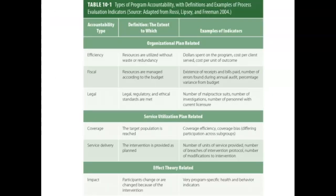Program managers are accountable for many aspects of a program. Here in Table 10-1 you can see the six different types of accountability which program managers are held to, and how they are related to the organizational plan, the service utilization plan, and to the effects theory. Each area of accountability requires some thought, planning, and oversight.